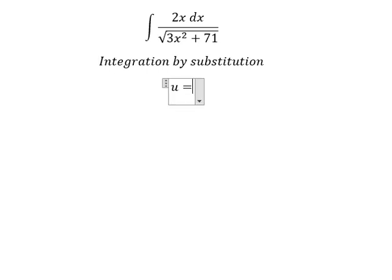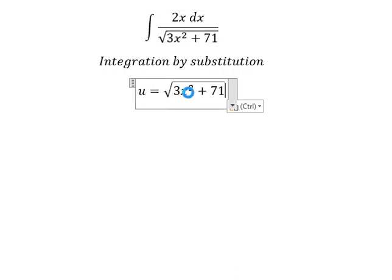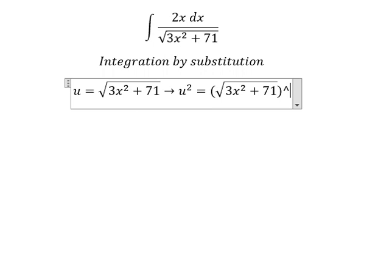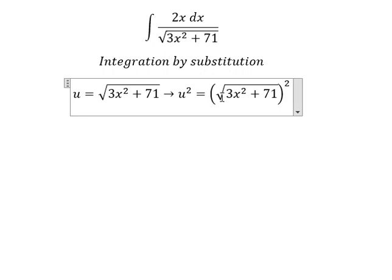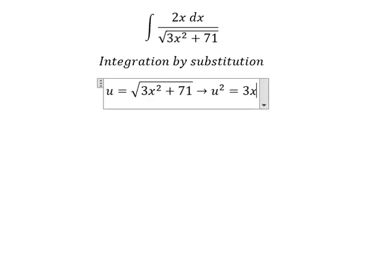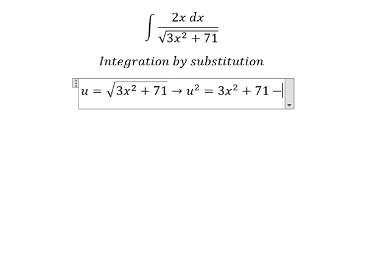We put u equals to this one. Then we square both sides to cancel the square root. Next, we need to do the first derivative for both sides. The first derivative of u squared, we have 2u.